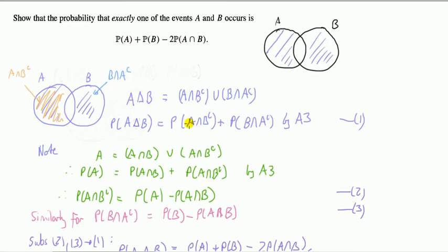Again I'm going to just use a partition. Note that A can be partitioned with A and B or A and not B, so these two form a partition of A. That means I can apply axiom 3 on the right hand side to get this. Similarly, right, then just rearrange to get this equals that minus that.